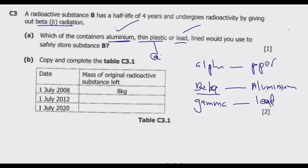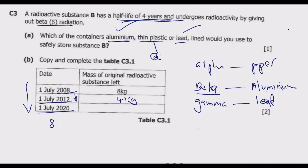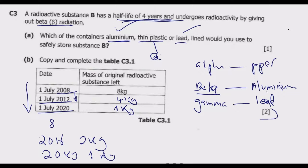Question B: Copy and complete table C3.1. We have the date, the mass of the original radioactive substance left, and time moving as per dates. We're told this radioactive substance has a half-life of 4 years. As at 1st July 2008 we had 8 kg. By 1st July 2012, which is exactly 4 years — one half-life — half of 8 kg would have decayed, leaving 4 kg. By 2016 it's 2 kg remaining, and by 2020 half of 2 kg gives 1 kg. This is how you complete the table to get the 2 marks.